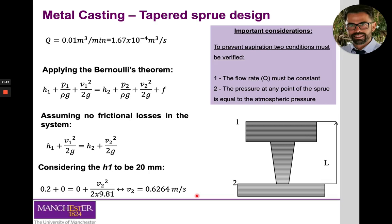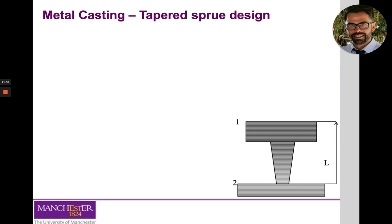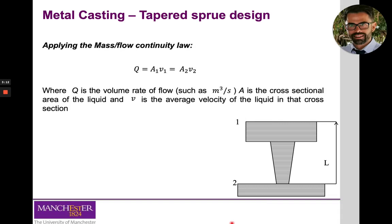Now we know the velocity of the metal at the exit of the sprue — this is the velocity the flow must meet in order to prevent aspiration. What we need to calculate next is the cross-sectional area at point 2. Now that we know the velocity and that the volume flow rate is constant from point 1 to point 2, we apply the law of mass continuity.